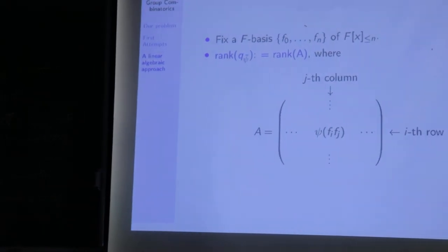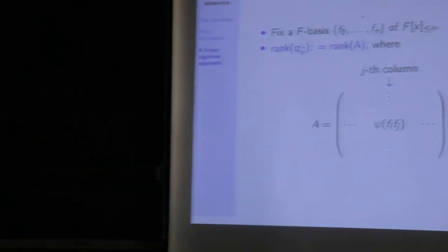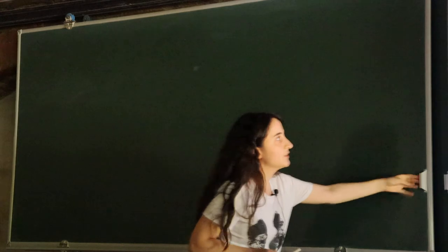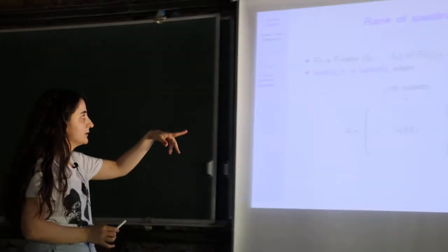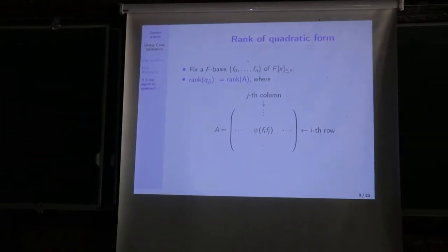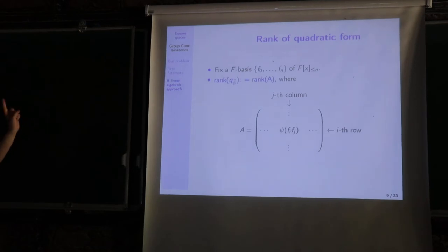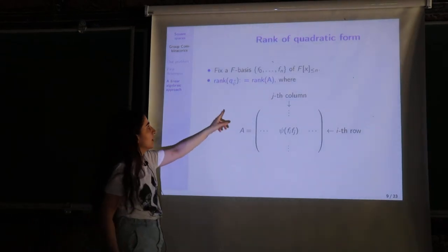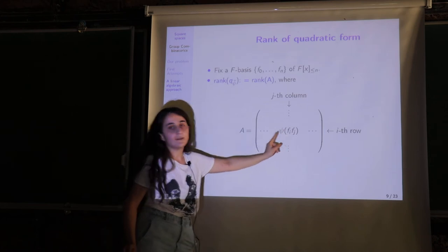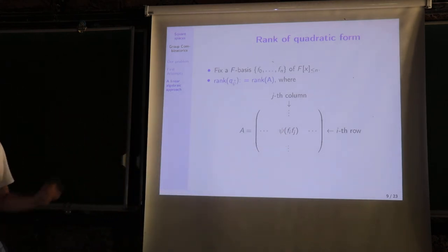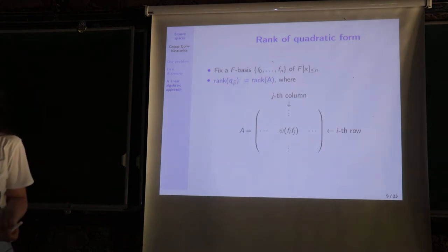We are interested in the rank of the quadratic form. To understand the rank, we use a matrix. We fix a basis F0 up to Fn for F[x]≤n. Then the rank of the quadratic form Q_{ψ̃} is defined as the rank of the matrix A whose entries are ψ̃ evaluated at Fi times Fj. The rank of this matrix is independent of the choice of basis.